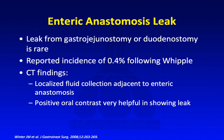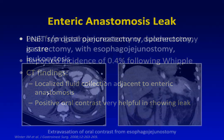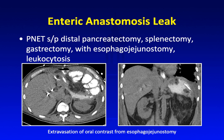Leak from the gastrojejunostomy or duodenojejunostomy is very rare — about 0.4% following a Whipple. CT findings again may show a localized fluid collection adjacent to the enteric anastomosis. Giving oral contrast makes the diagnosis much easier, as we would expect to see free extravasation of oral contrast material. In this patient with a PNET status post-extensive surgery including distal pancreatectomy, splenectomy, gastrectomy, and esophagojejunostomy — who was septic with a high white count — oral contrast made it through the small bowel, but an irregular contrast collection in the left upper quadrant revealed breakdown at the esophagojejunostomy.